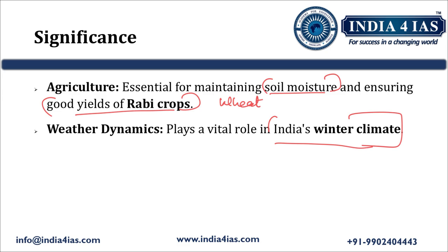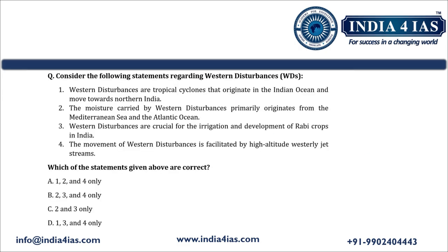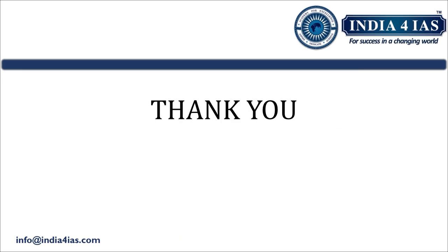This covers what Western Disturbance is, how it originates, its movement, its characteristics and features, its impact on Indian agriculture and weather system, and its significance. Based on this topic, we have provided one PLIMS practice question with four statements — comment your answer below. The detailed answer and explanation, along with the full notes of this video, are available in the PDF handout downloadable from our Telegram channel. Thank you for watching, see you in the next video. Till then, happy learning.